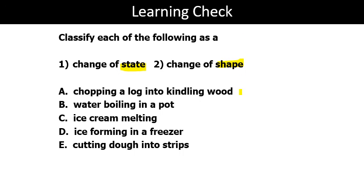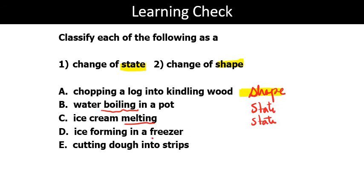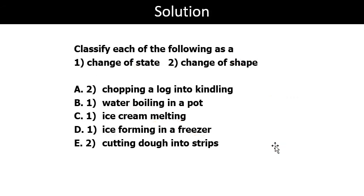We still have the same substance — this is a physical change, a change of shape. Water boiling means we are going to have a phase change, so 'state' is the correct answer. Melting is another terminology to memorize for phase change. Ice forming in a freezer is another phase change. The last one is obviously a change of shape. These are the correct answers.